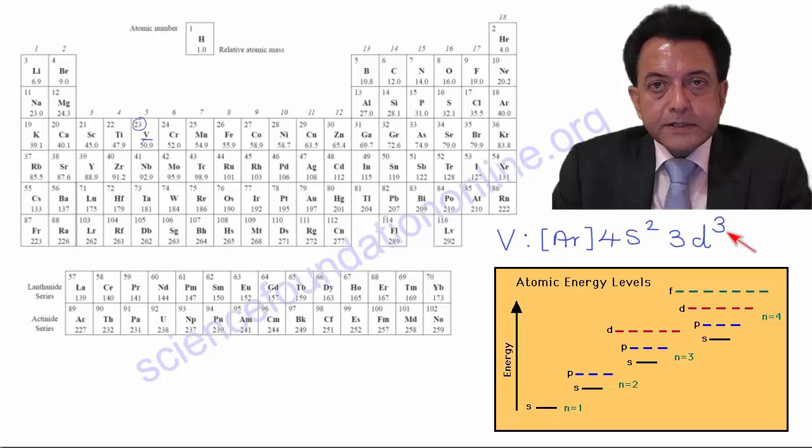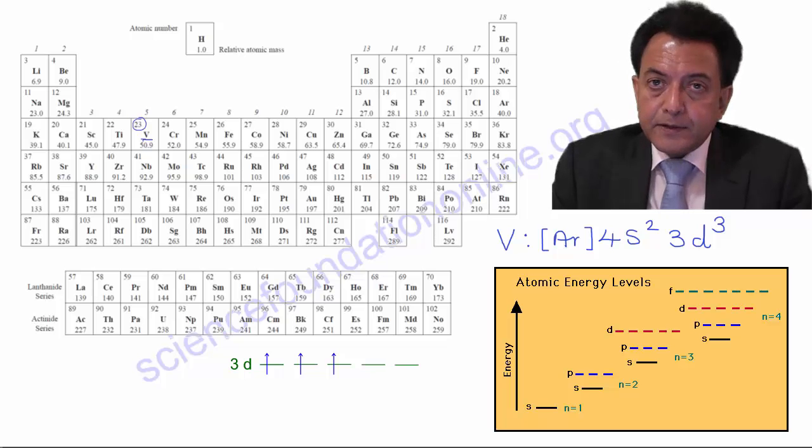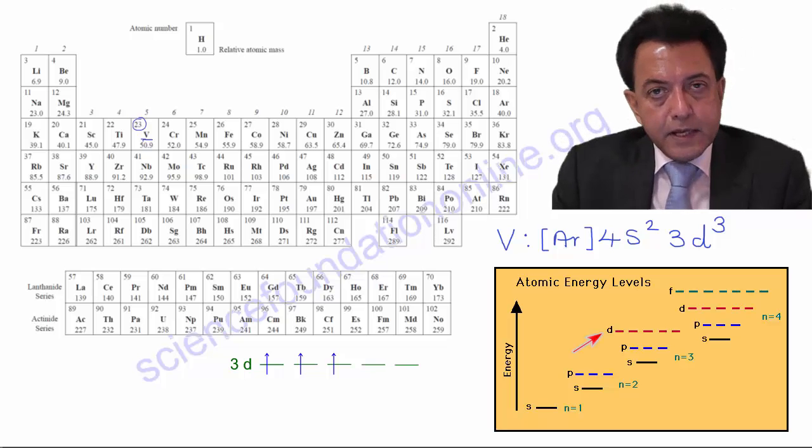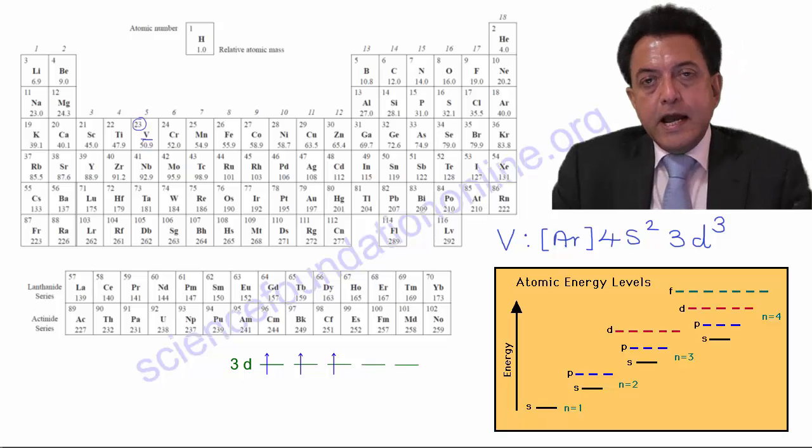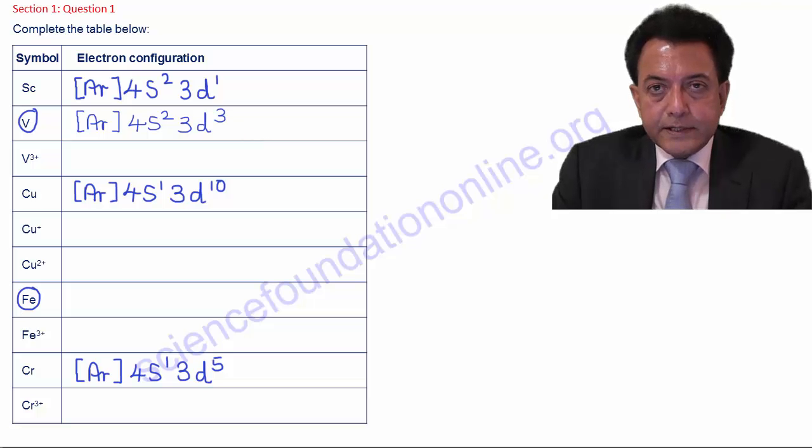The reason that these 3 d electrons of vanadium enter separate d orbitals is because electrons repel each other, and it is more energetically favorable for electrons to be spaced further apart. So, each orbital of the same energy needs to have at least one electron before a second electron goes into an orbital that already has an electron. Now, the next example, Iron.